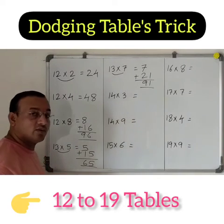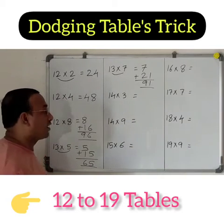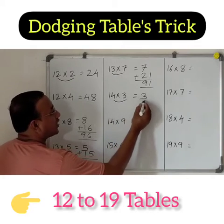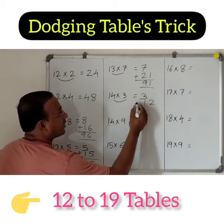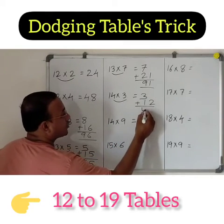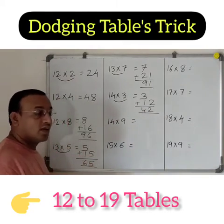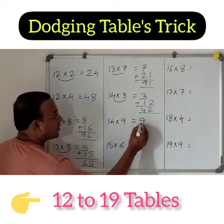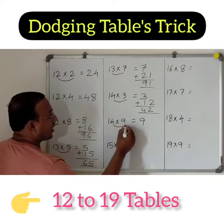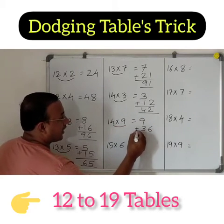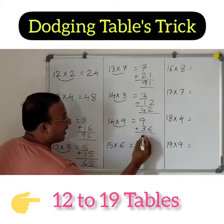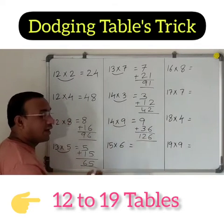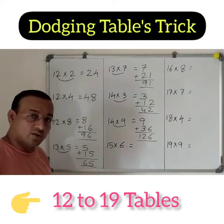Let's complete the remaining ones with the same technique. So 3 as it is, 3 fours are 12 — right under that 3 and add it — so it is 42. Next, 9 as it is, 4 nines are 36 — right under that 9 and add it. So 6 and 126. 4 nines are 126.